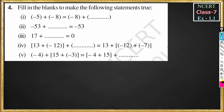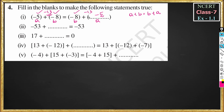Exercise 1.1, Question 4, Question 1: minus 5 plus minus 8 is equal to minus 8 plus minus 5, because addition of integers follows the commutative property. Commutative property states a plus b is equal to b plus a. Here, a is minus 5 and b is minus 8. So minus 5 plus minus 8 equals minus 13, and minus 8 plus minus 5 also equals minus 13. Hence the answer is minus 5.